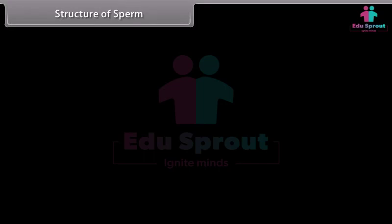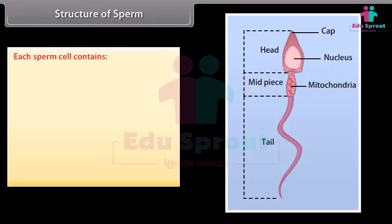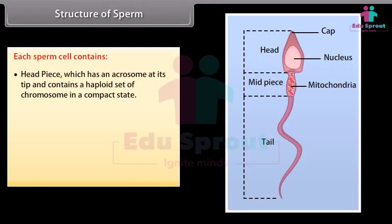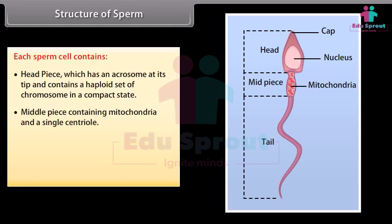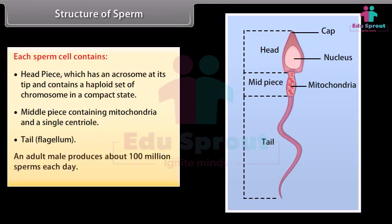Each sperm cell contains a headpiece, which has an acrosome at its tip and contains a haploid set of chromosomes in a compact state. The middlepiece contains mitochondria and a single centriole. The tail or flagellum enables motility. An adult male produces about 100 million sperms each day.